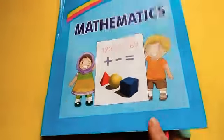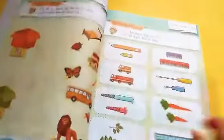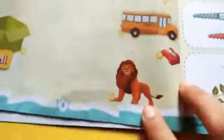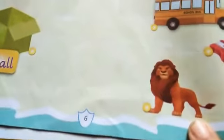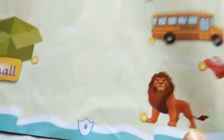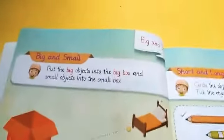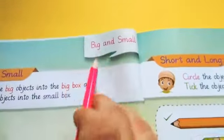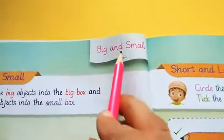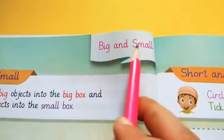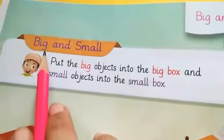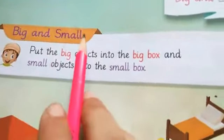Open your maths book. Open page number 6. This is your page number 6. The concept is big and small. Big and small.